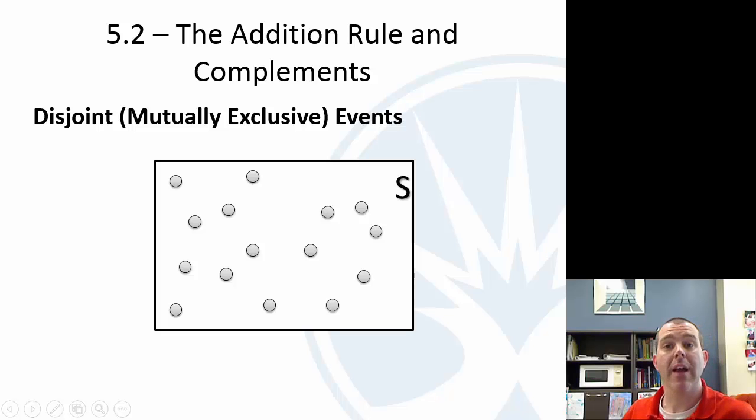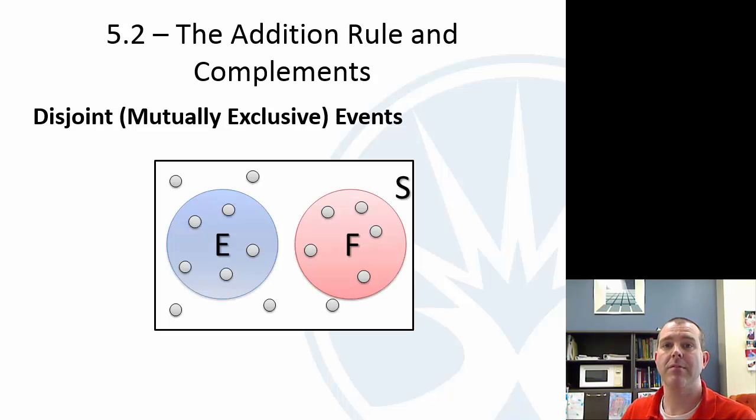All right. Another concept is this idea of disjoint or mutually exclusive events. Same phrase, disjoint, mutually exclusive. So we'll see quickly here in the Venn diagram what makes this one different. If we have event E and event F, in this case they don't overlap.